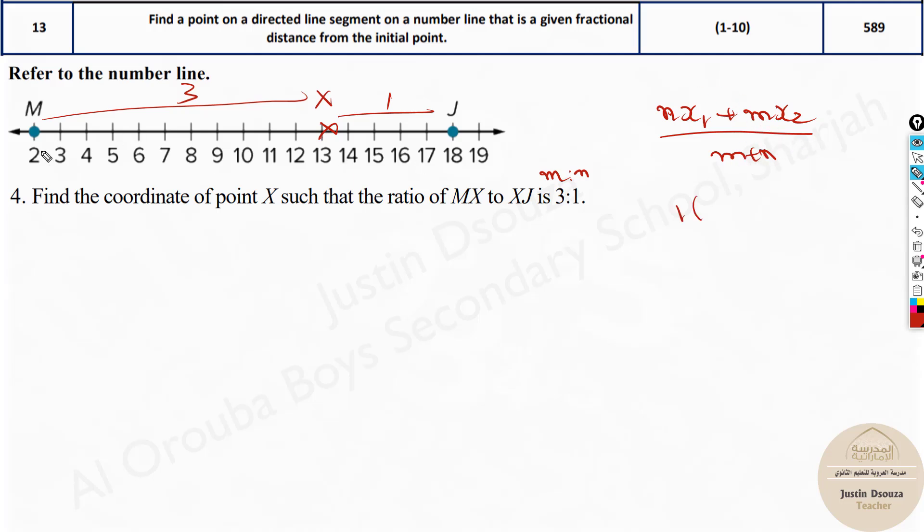x₁ over here is the initial point and the terminal point is x₂. Now let's substitute all the values. The n value is 1 multiplied with the x₁, x₁ is 2, plus m is 3 multiplied with 18, divided by m plus n, that is 3 plus 1. 2 times 1 is 2 plus 18 times 3 is 54, divided by 4, and we get 56 by 4, that is 14. So the answer will be 14 over here.